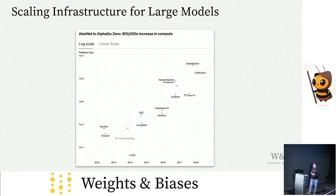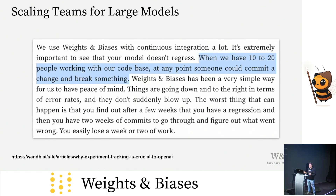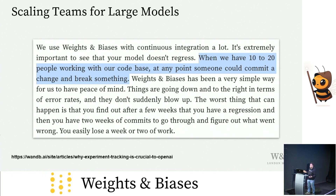At that time, OpenAI was talking about scaling infrastructure for large models, and also scaling the teams to build these large models. They said when you have 10 to 20 people working with a codebase, at any point someone could commit a change and break something. It's been so exciting to see so many other organizations get to the point where they have 10 or 20 people trying to build something together. Back then 10 seemed like a lot, then organizations like Meta became hundreds of people, and now with the way Stability and others are working in public, these teams are practically thousands of people working together.